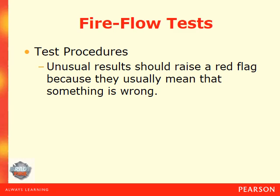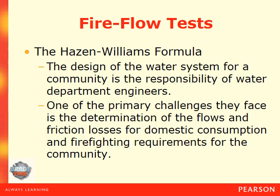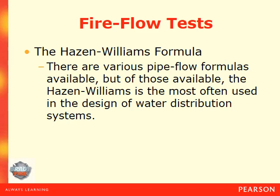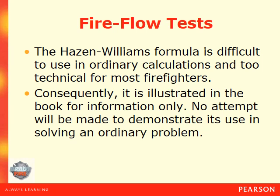I don't really expect you guys to know how to do a flow test if you're not familiar with it — this is more just a vague familiarity of the process and what it entails. The Hazen-Williams formula: the design of a water system for a community is the responsibility of the water department engineer. One of the primary challenges they face is the determination of flows and friction loss for domestic consumption and firefighting requirements for the community. The water distribution system information here is more just for your information and something you don't need to commit to memory — it's just how they determine how much water needs to be in the system to meet community demands.